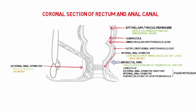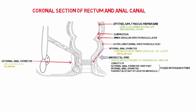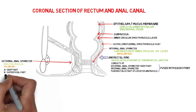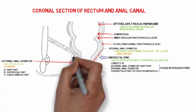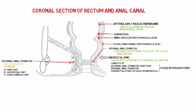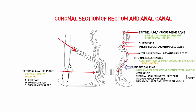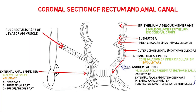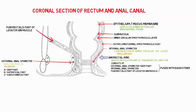The external anal sphincter consists of three parts known as deep, superficial, and subcutaneous. The puborectalis part of the levator ani blends with the deep part of the external anal sphincter and the internal anal sphincter to form the anorectal ring.